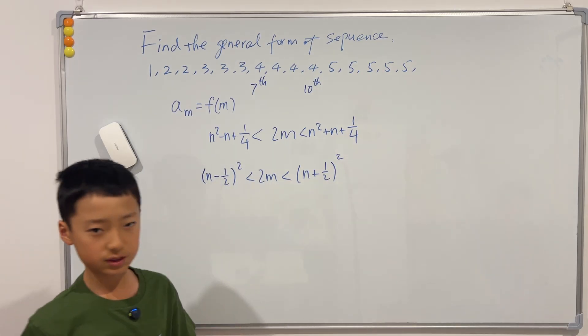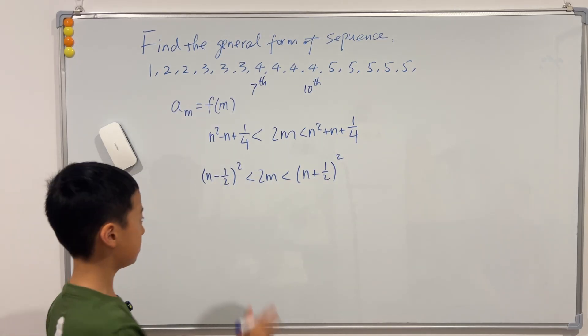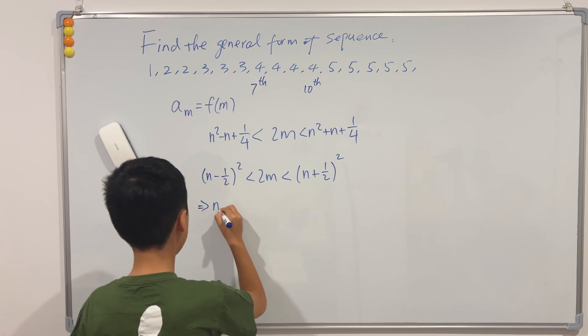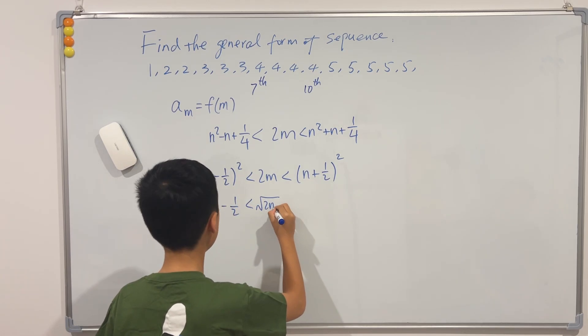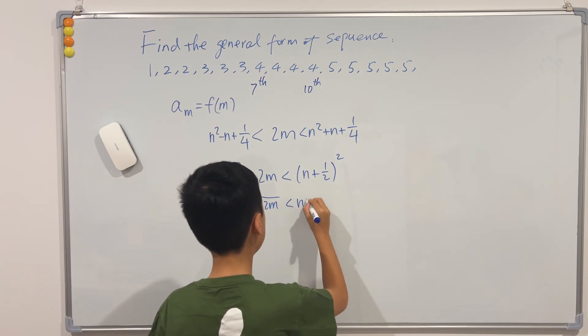And now since everything is positive we can take square root. So we have n minus one half is less than the square root of 2m is less than n plus one half.